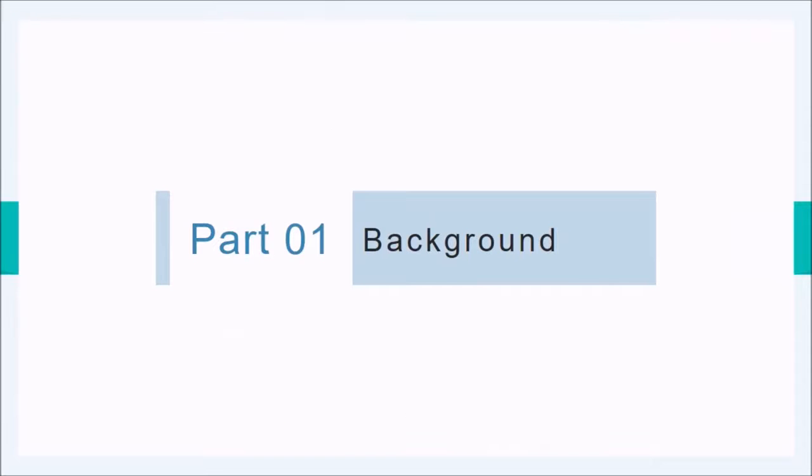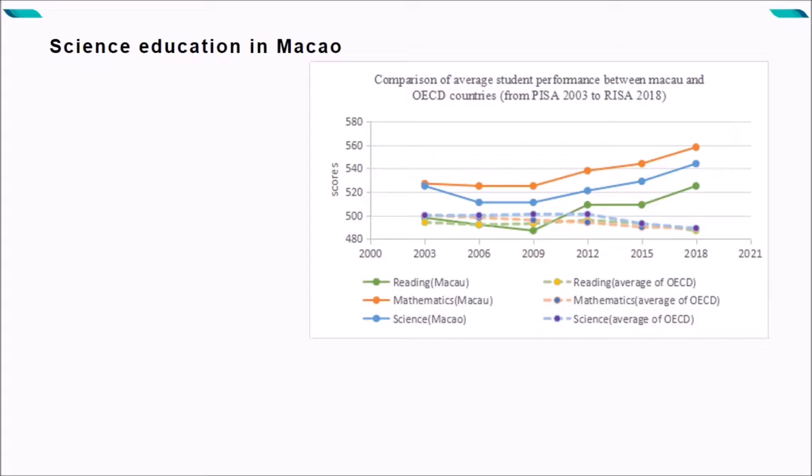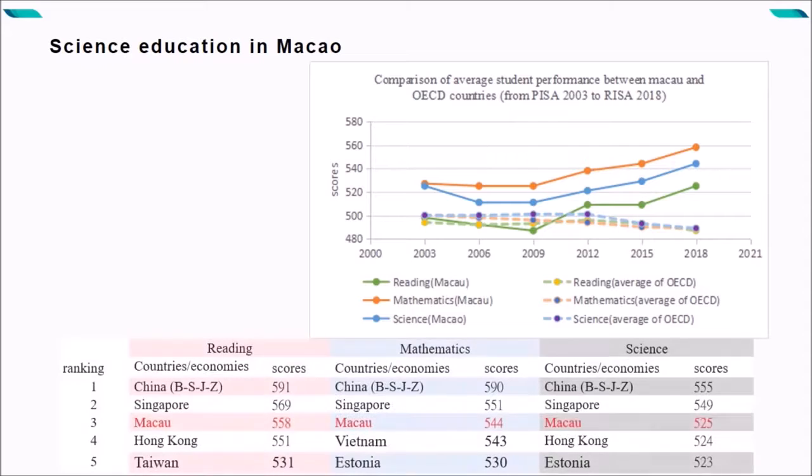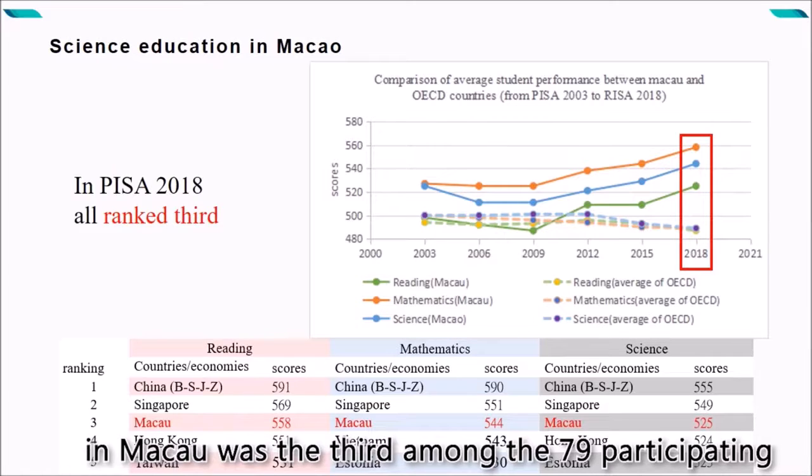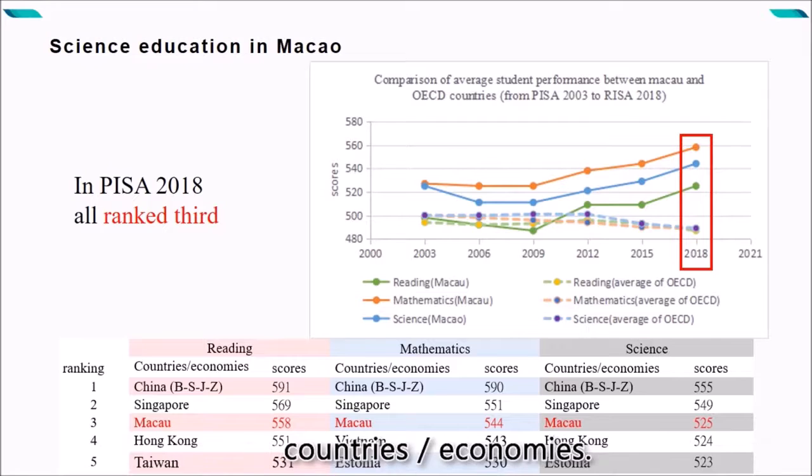Background. In a recent PISA test for 15-year-old students, Macau has achieved many successes, especially the PISA test in 2018. The range of reading, mathematics and science literacy in Macau was the third among the 79 participating countries or economies.